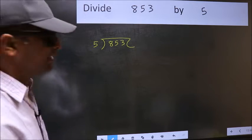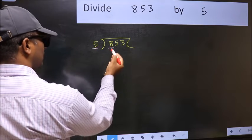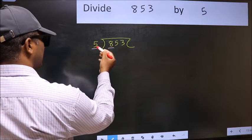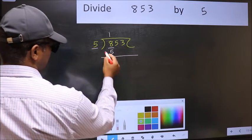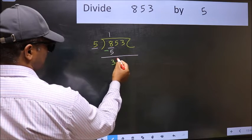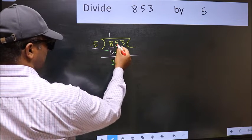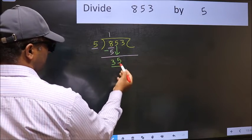Next. Here we have 8 and here 5. A number close to 8 in 5 table is 5 once 5. Now you should subtract. 8 minus 5, 3. After this, bring down the beside number. So 5 down. Now 35.